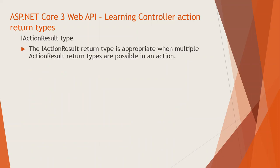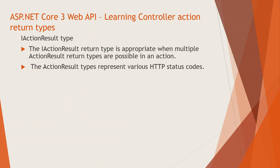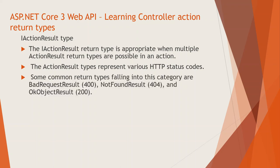IActionResult type we will take first. The IActionResult return type is appropriate when multiple action result return types are possible in an action. The action result types represent various HTTP status codes — like status code 201 Created for a new item created, status code 200 OK, and status code 404 Page Not Found. Some common result types falling into this category are: BadRequestResult fetching status code 400, NotFoundResult 404, and OkObjectResult 200.